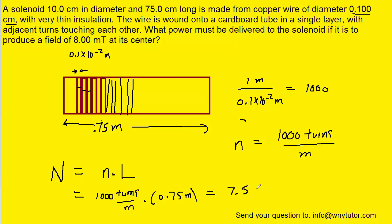And we can see that we get 7.5 times 10 to the power of 2 turns, or 750 turns. So that is the actual number of turns of wire that's going to go along the length of the solenoid.